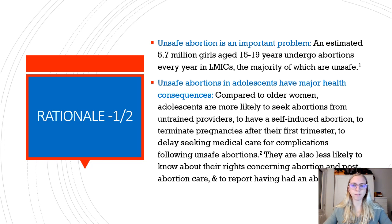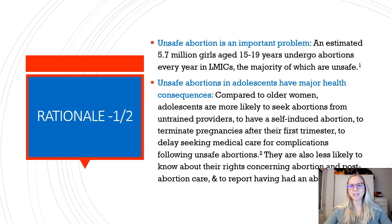So what is the rationale for providing safe abortion care to adolescents? The first point is that unsafe abortion is an important problem. The Guttmacher Institute in 2019 estimated that 5.7 million girls age 15 to 19 years undergo abortions every year in low and middle income countries, the majority of which are unsafe. Second, unsafe abortions in adolescents have major health consequences. Compared to older women, adolescents are more likely to seek abortions from untrained providers, to have a self-induced abortion, and to terminate pregnancies after the first trimester.